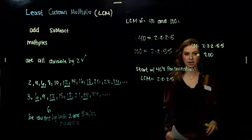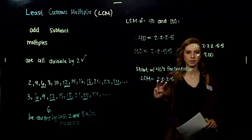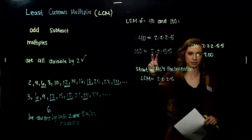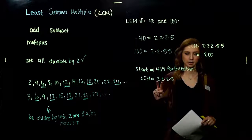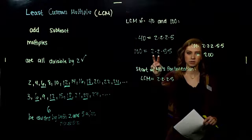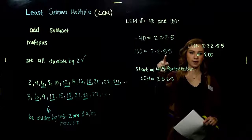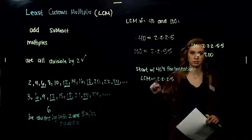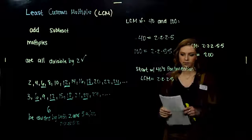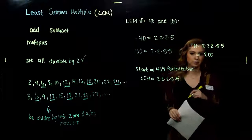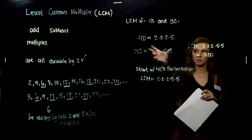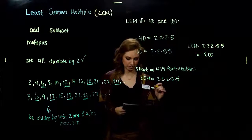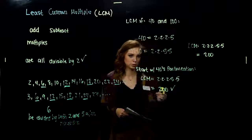Then we ask: what is my LCM missing that the other number still has? I've got three factors of 2 in my LCM — do I need any more? The two factors of 2 in 100 are already inside my LCM. But I've only accounted for one factor of 5 from 100, and I'm missing another factor of 5. So we build from there, and we still arrive at 200.